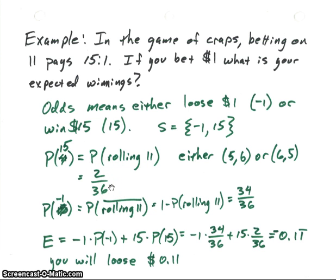Now what's the probability of having a minus 1, or getting a minus 1? It's the probability of not rolling an 11. And of course the probability of not rolling an 11 is 1 minus the probability of rolling an 11. And so we can calculate that real easily as 34/36.